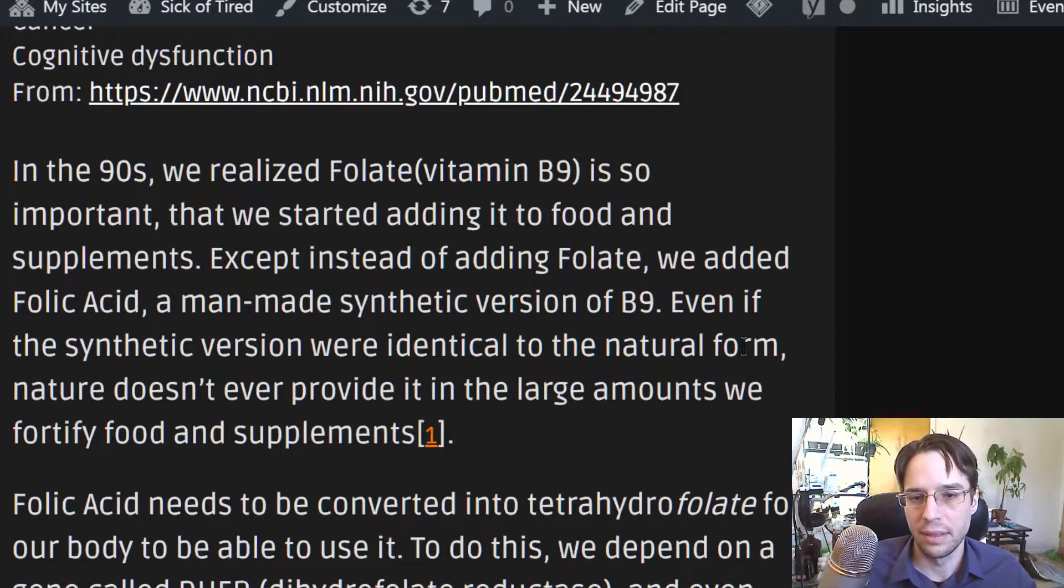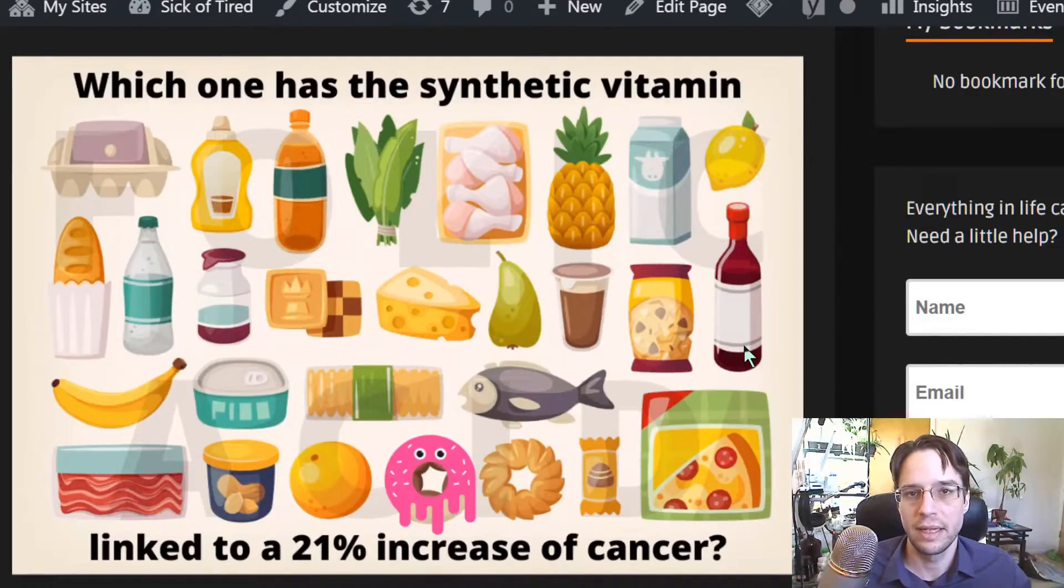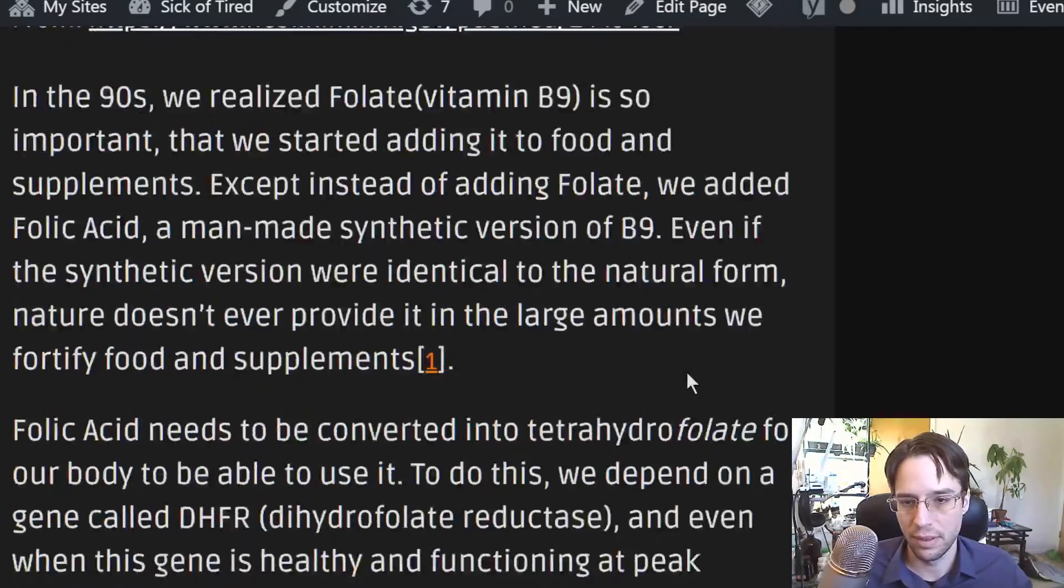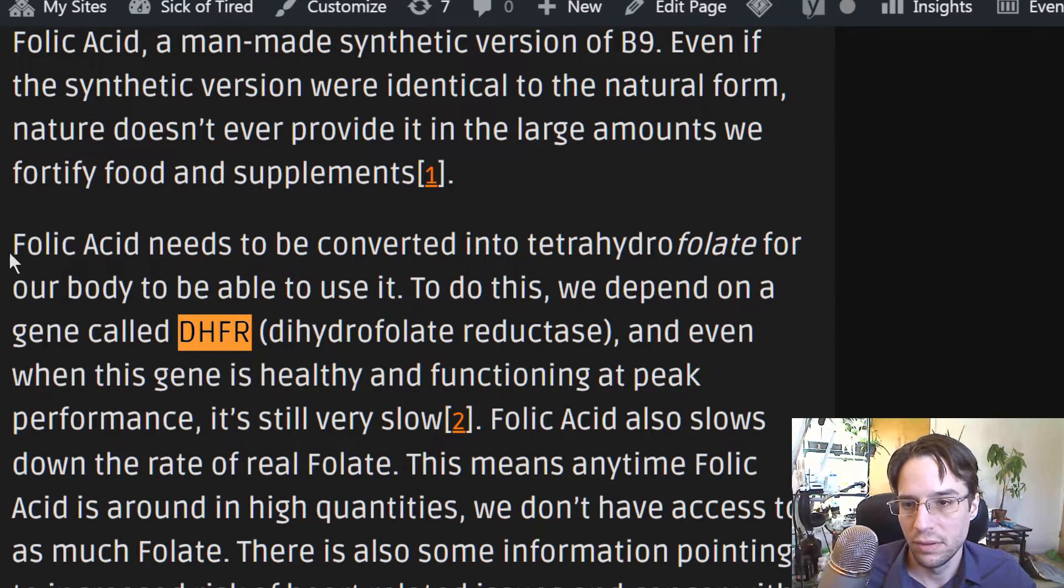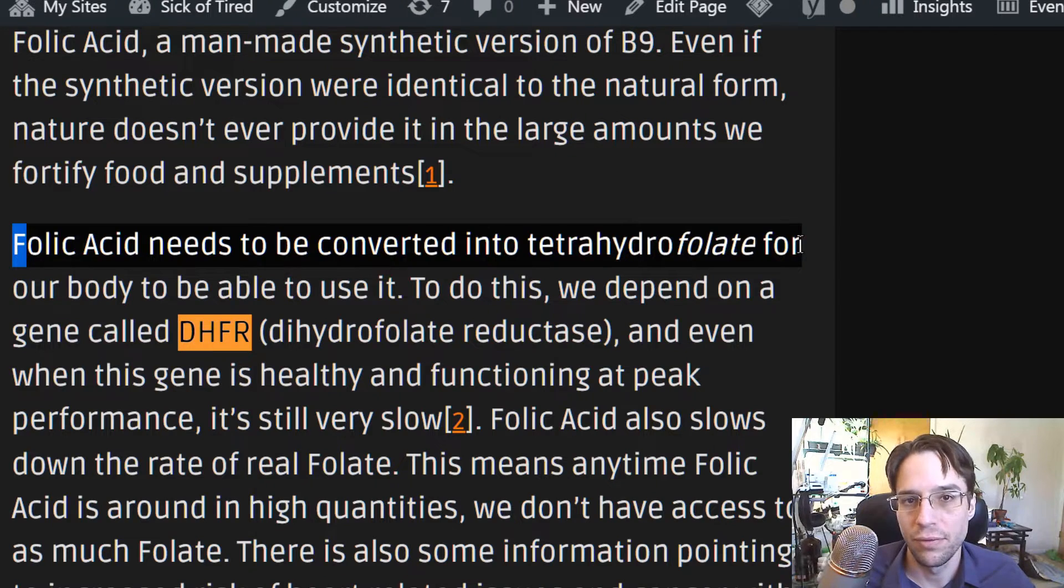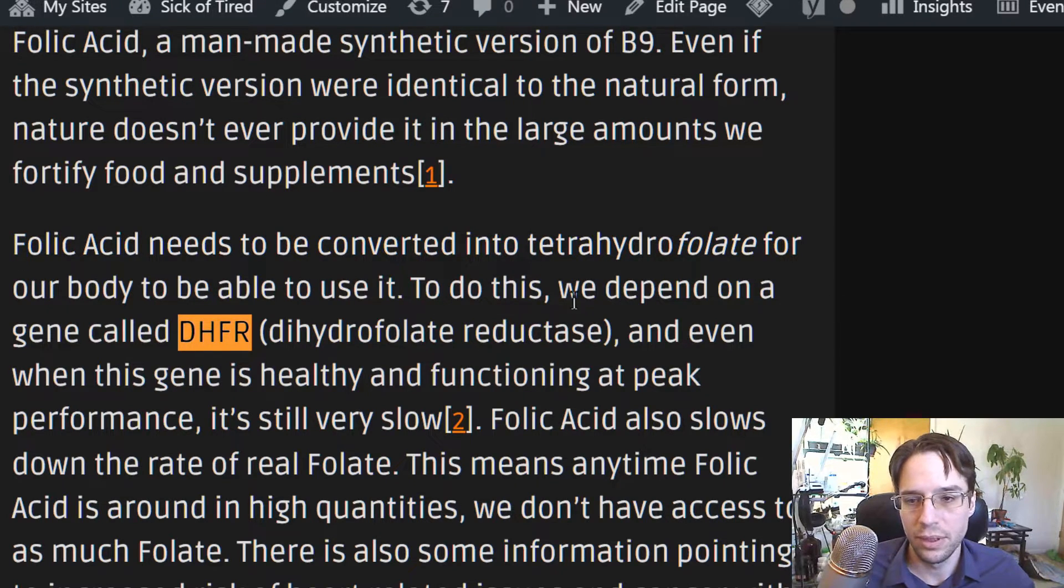So the reason this is an issue with folic acid is because we have to depend on this gene. Folic acid needs to be converted into tetrahydrofolate, which is an activated form of folate. I'm just going to call that active folate. To do this, we depend on a gene called DHFR, dihydrofolate reductase. This gene, even when it's healthy, does not move quickly.